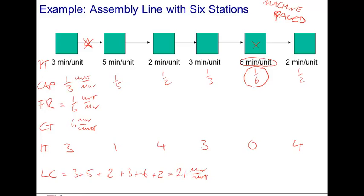The total idle time across all units is three plus one plus four plus three plus four, which is 15 minutes. We can then define the average labor utilization as 21 minutes labor content divided by 21 plus 15, which is the average utilization in this process.